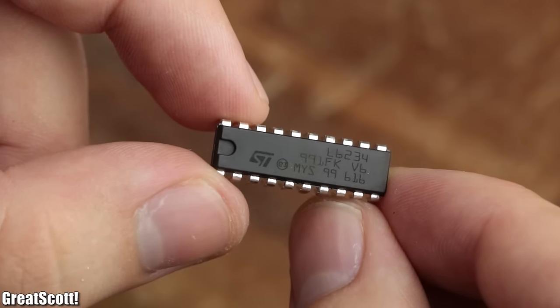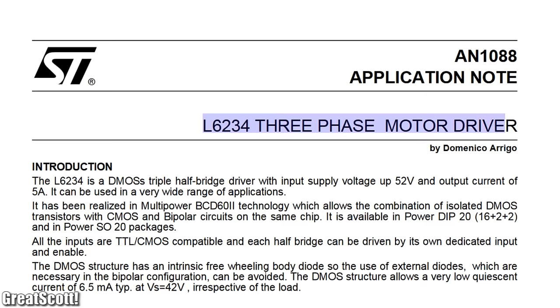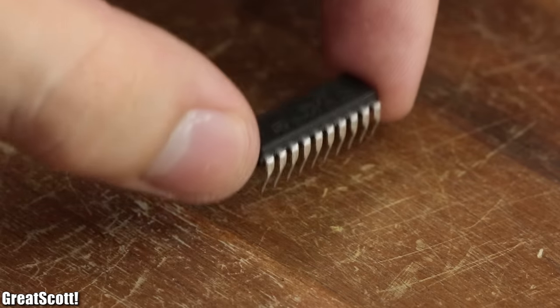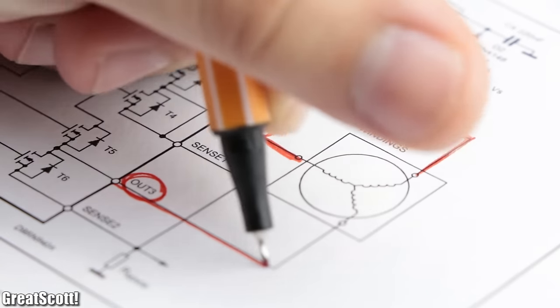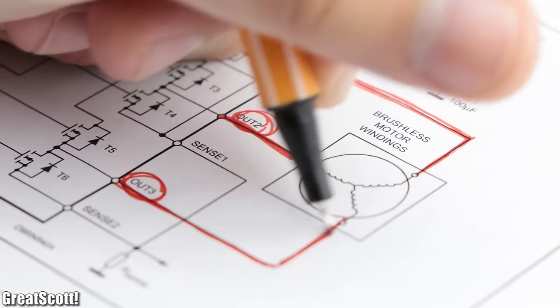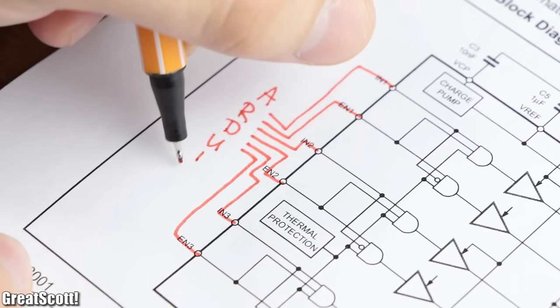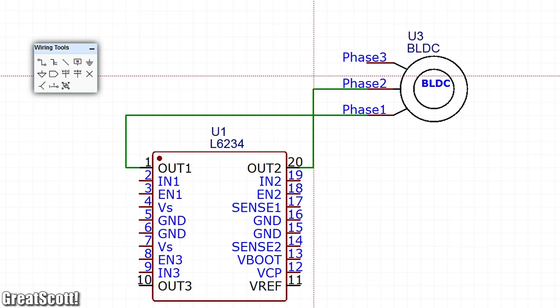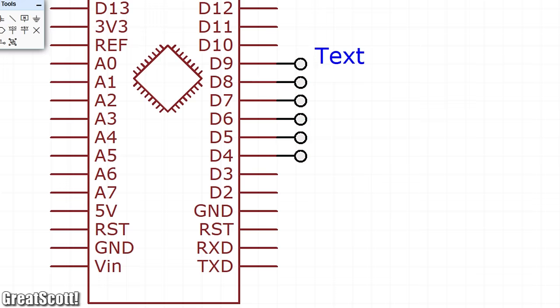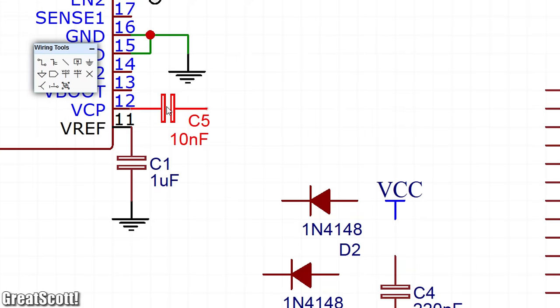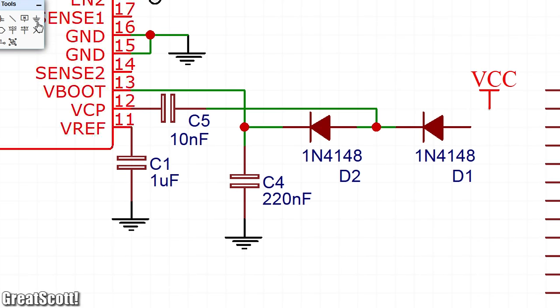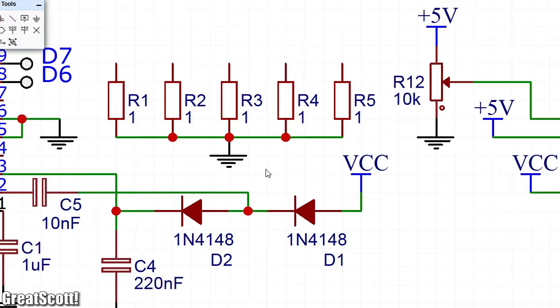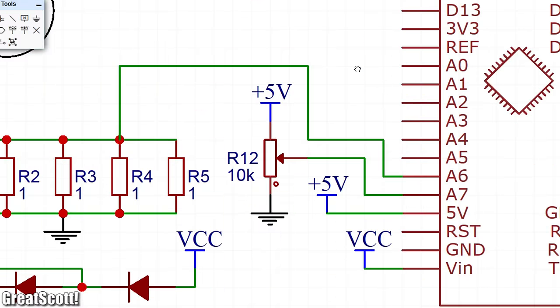That is why I went with this L6234 three-phase motor driver IC, since it combines the three MOSFET half bridges and driver circuitry in a simple to use package. All we need to do is to connect the motor phases to the output pins of the IC and connect its six input pins to the Arduino. So I went ahead and created a first schematic for the project, in which I not only connected the output and input pins of the IC, but also added the complementary components for the bootstrapping, a potentiometer to adjust the rotation speed, and five 1-ohm power resistors, which will have an important function for the circuit later on.